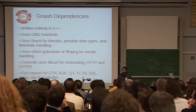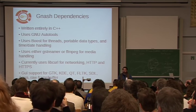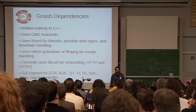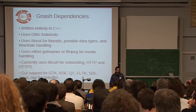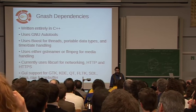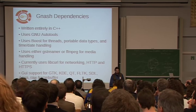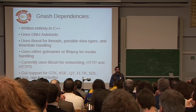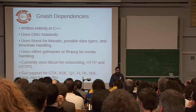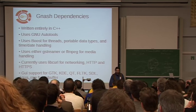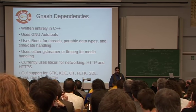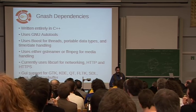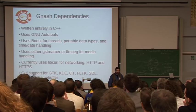GANASH is written in C++, which is somewhat unusual for GNU projects, but a lot of things actually translate pretty well to C++. We also use the GNU autotools. We use Boost a lot — a lot of the Boost classes are being added to the standard template library for C++. We support GStreamer or FFmpeg. We support a bunch of different networking protocols, including the one I'm about to talk about. And we support a lot of different GUIs, because we figure people should use the desktop and GUI toolkits they're used to.